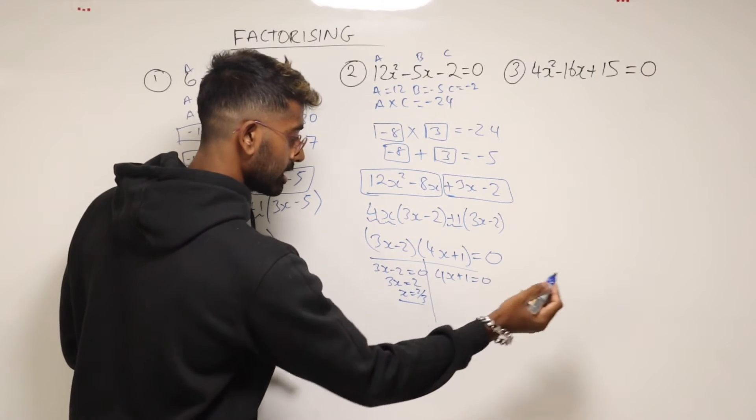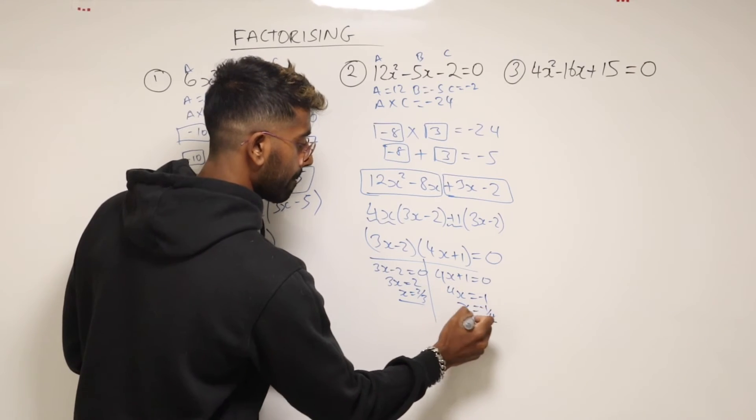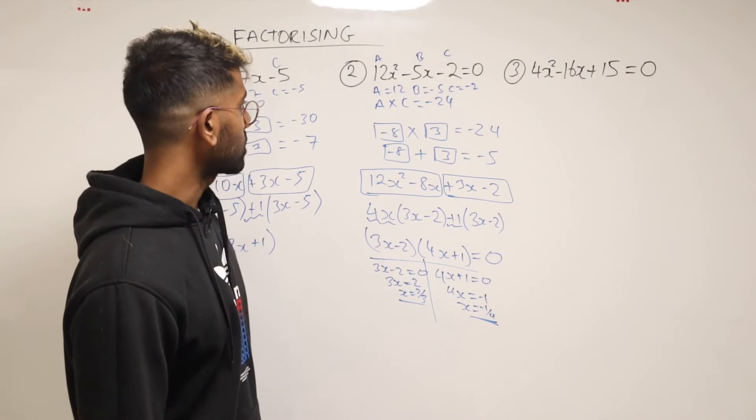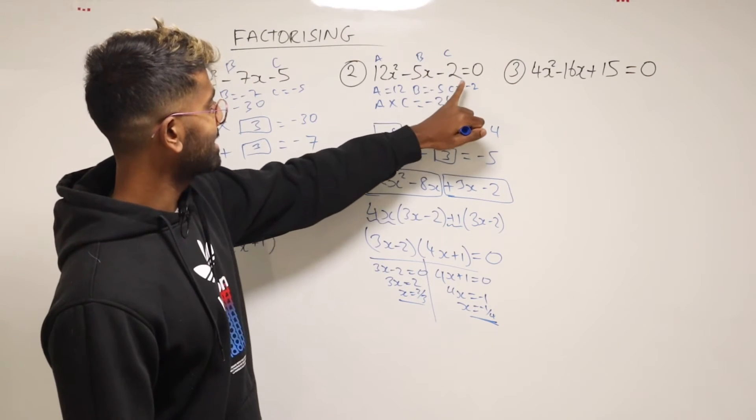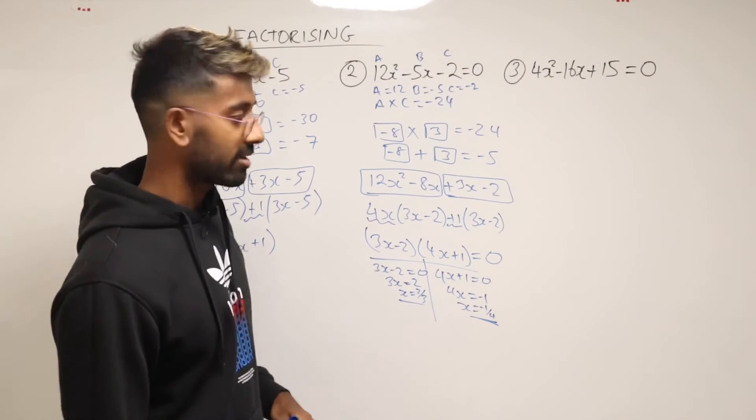Same over here. Take the one over. So 4x equals minus 1. x is equal to minus a quarter. And there you go. You solved your quadratic. So if you take this, plug it back into x, hit equals on your calculator, it should come out as zero. So you can go and try that for yourself.